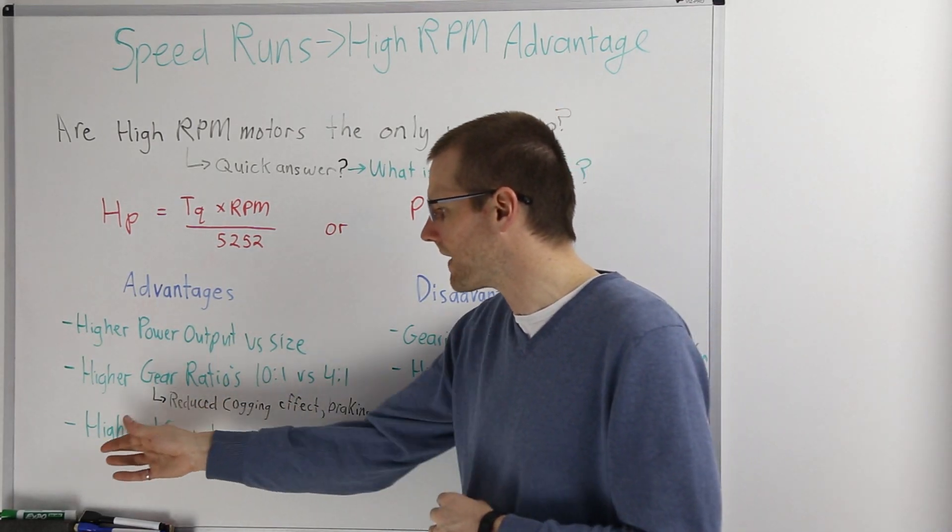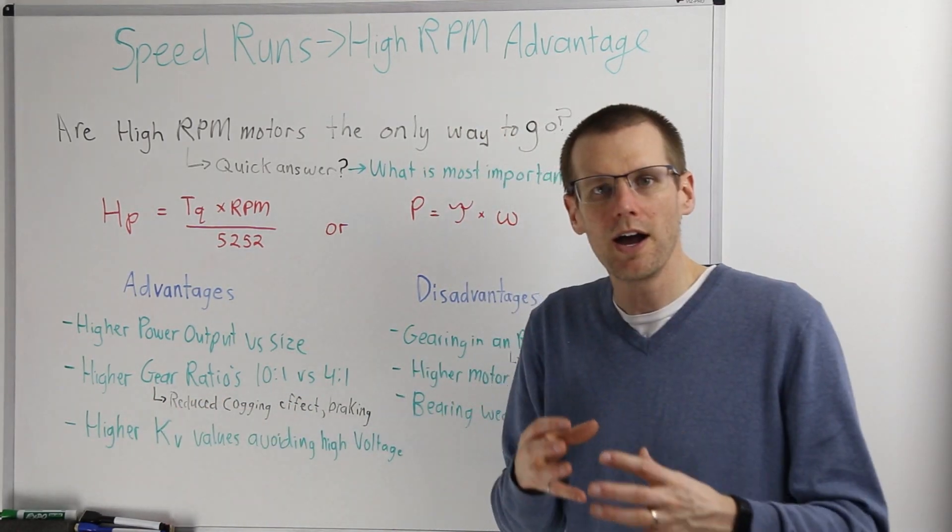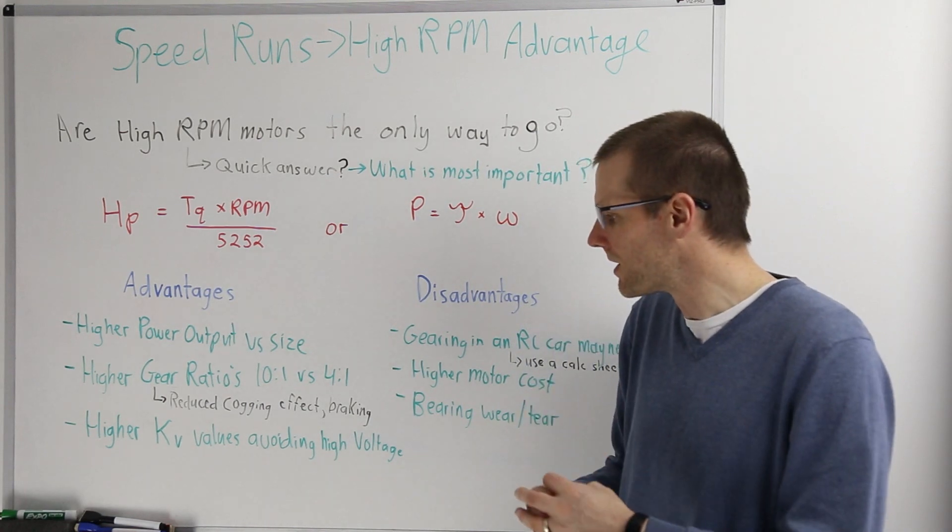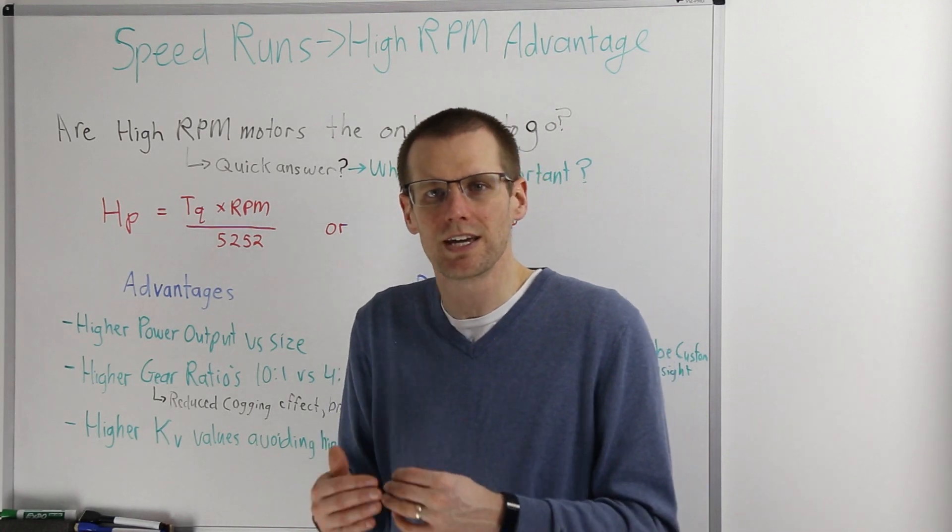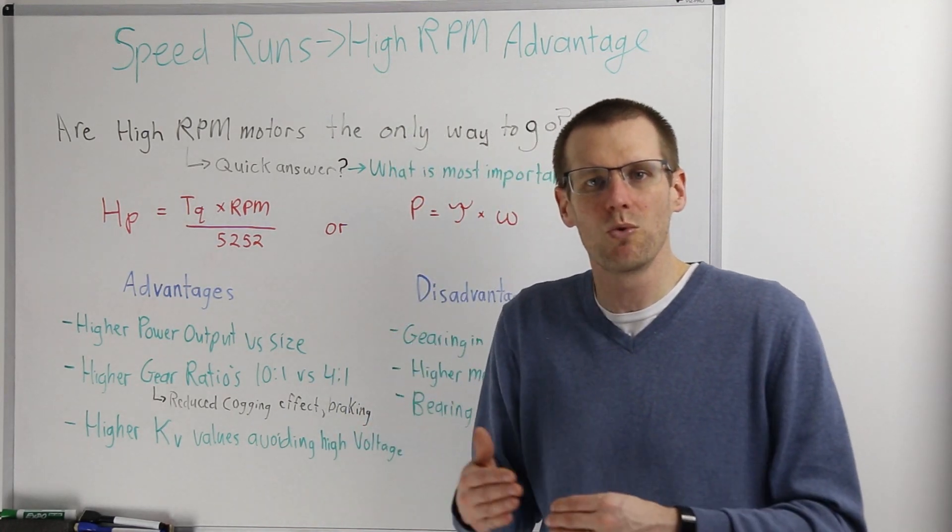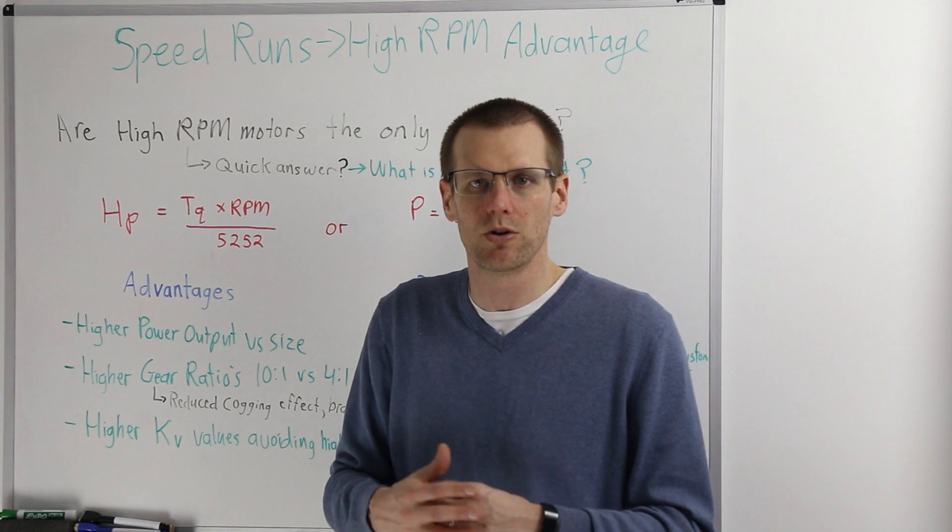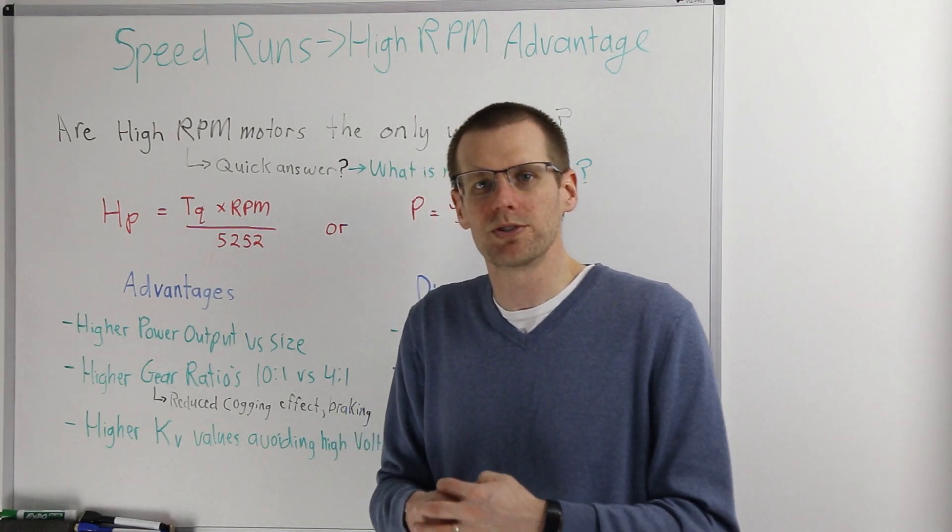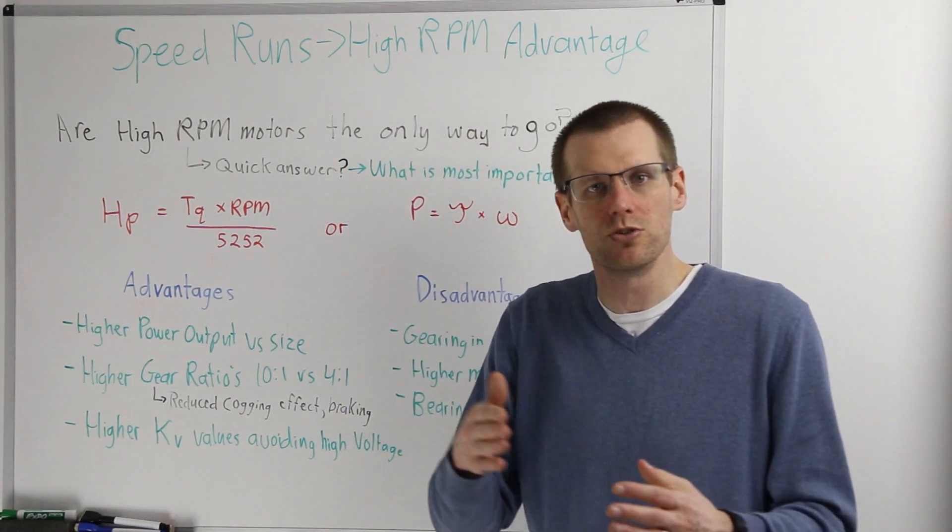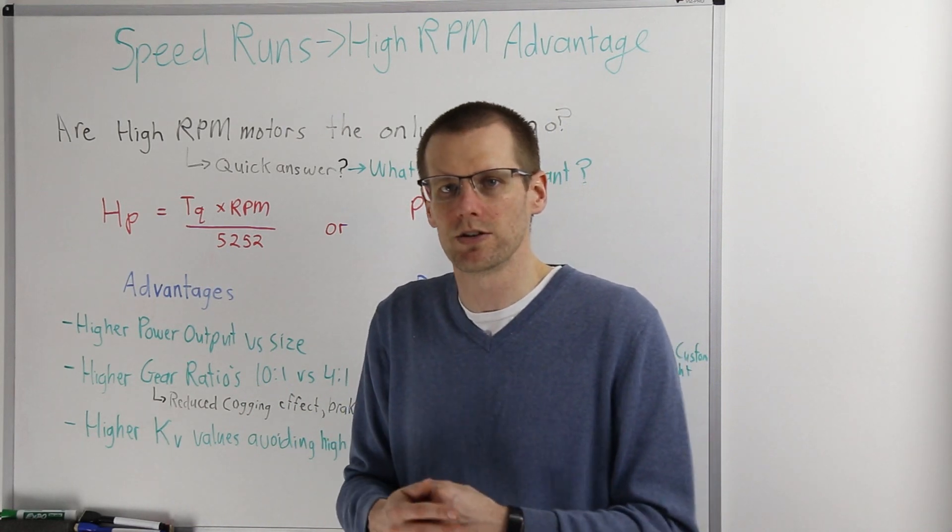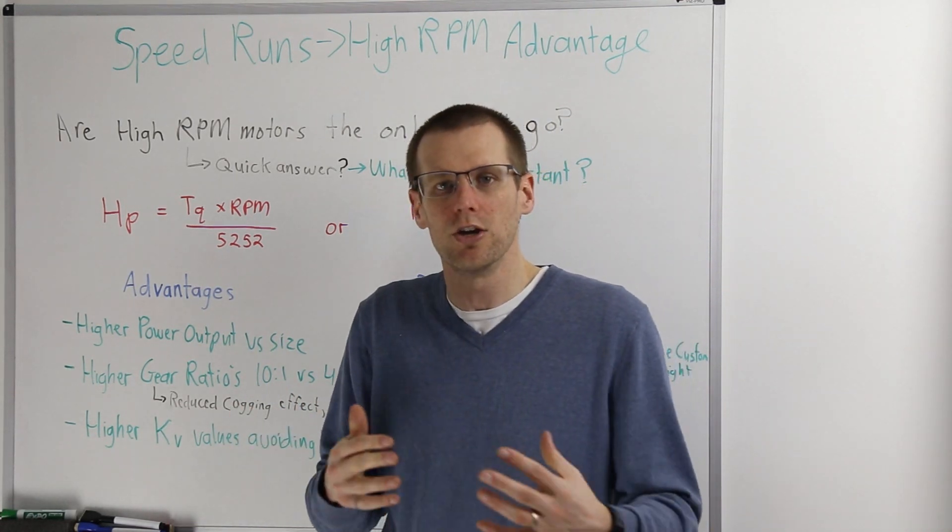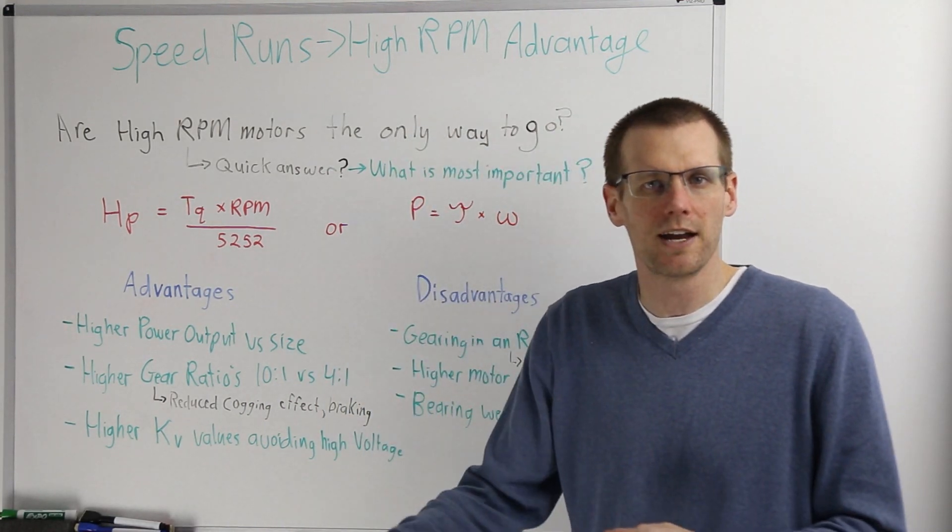Let's read off the last advantage that we have here on the board. Higher KV values essentially allow us to avoid using high voltages, which is a good advantage to us because they essentially operate the same way that any other brushless motor would operate. We're still able to use voltages between 4 to 8s in order to operate our top speed run cars. And that really is a good thing for us to not have to go in and stretch ourselves to 10 or even 12s.